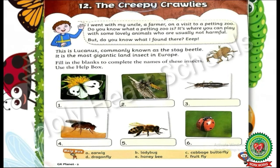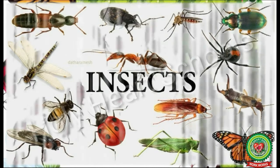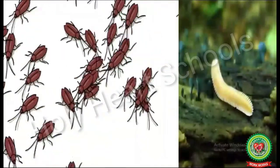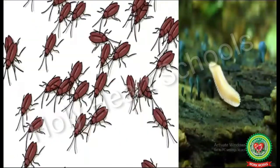Creepy means something that makes you feel nervous. Crawlies means small crawling insects. Creepy crawlies are insects which creep or crawl. Crawl means walking on four or more legs.